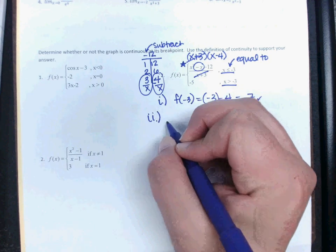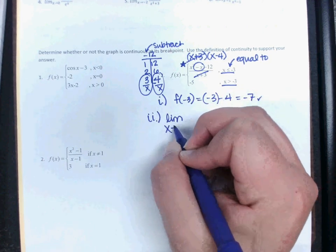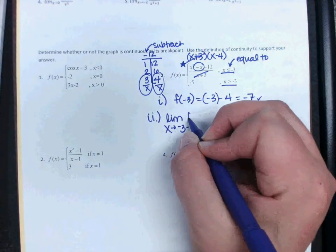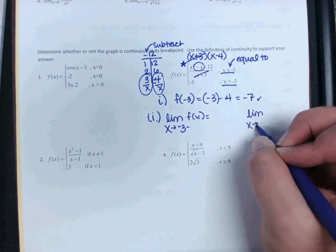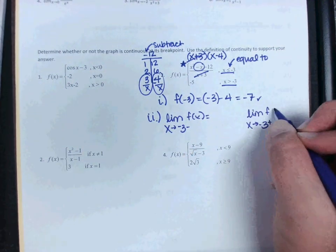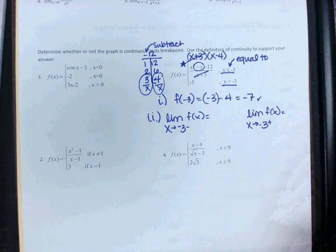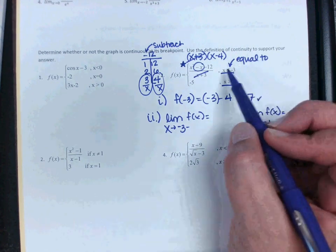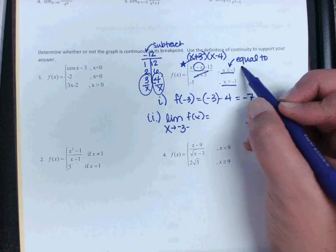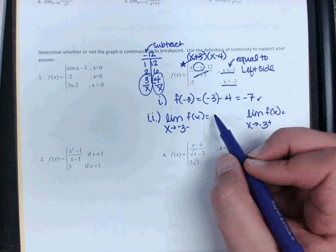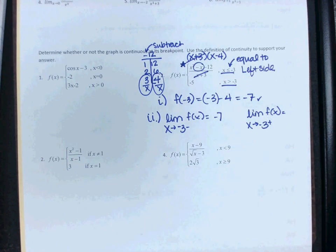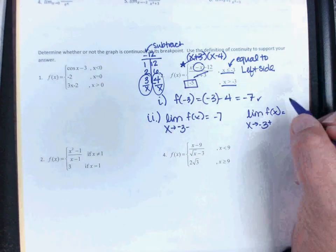Step 2. We need to find the limit as x approaches negative 3 from the left. And then we need to find the limit as x approaches negative 3 from the right. We already did the top part. And remember that the top part represents the left side limit. So I'm just going to copy that answer down. We got a negative 7.